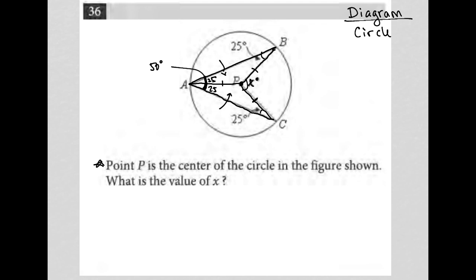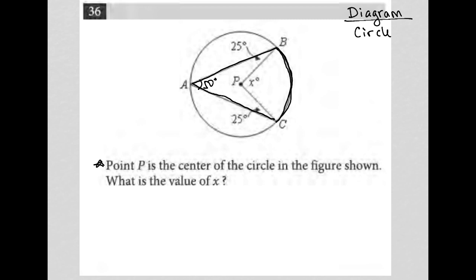I'm going to show you two ways to figure it out. So one way: let's erase some things and just put 50 there since we now know how we got there. This angle BAC is called an inscribed angle — hopefully you remember that term from geometry, if not, put it in your notes. An inscribed angle is always half of the degree measurement of the arc that it creates. So arc BC — if angle A is 50 degrees, that means arc BC is 100 degrees. And angle X is what we call a central angle. The central angle is always equal to the arc that it creates, which tells me that X equals 100.